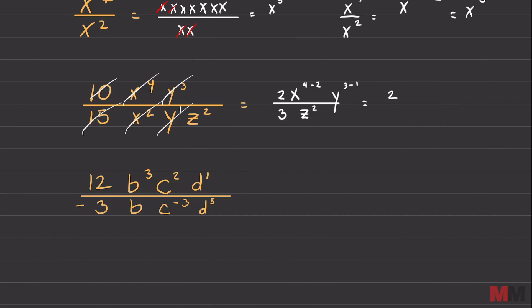Two thirds, we're not going to touch. That's going to stay the same. Four minus two for the x is going to get you x squared. And y, three minus one, is also y squared. The z squared remains at the bottom. And there's nothing else you can really do. That is it. Let's go over the last question.